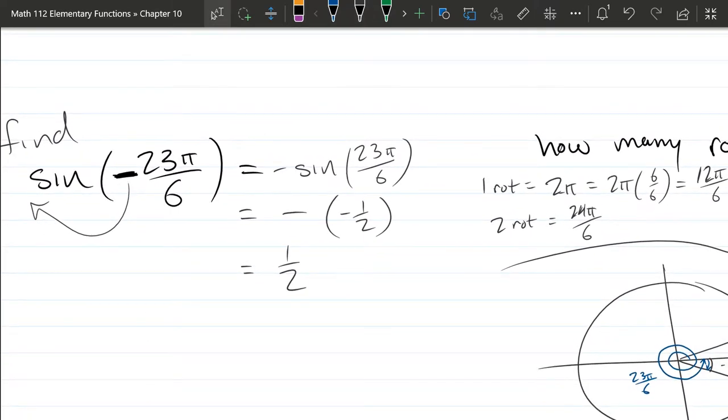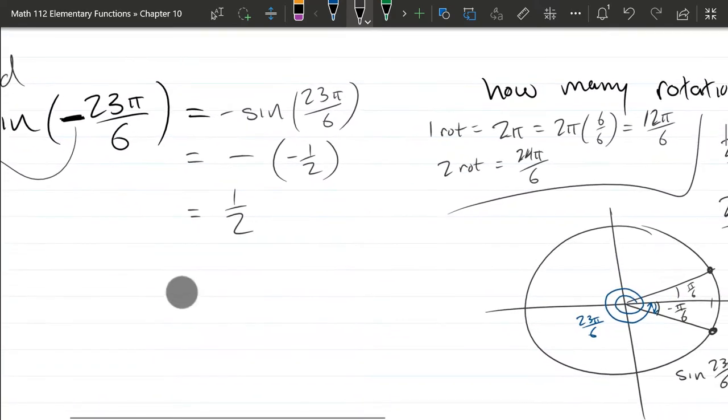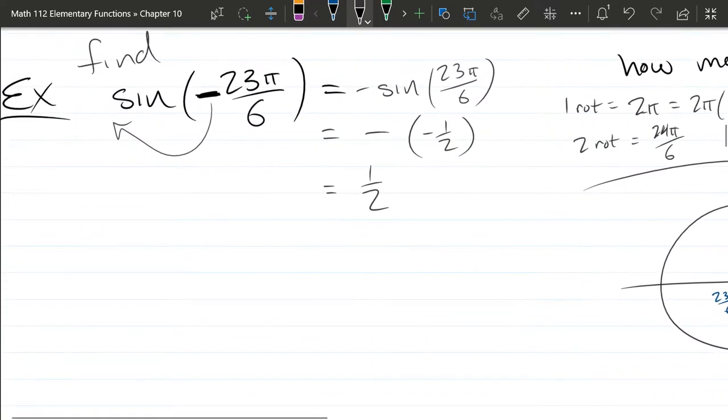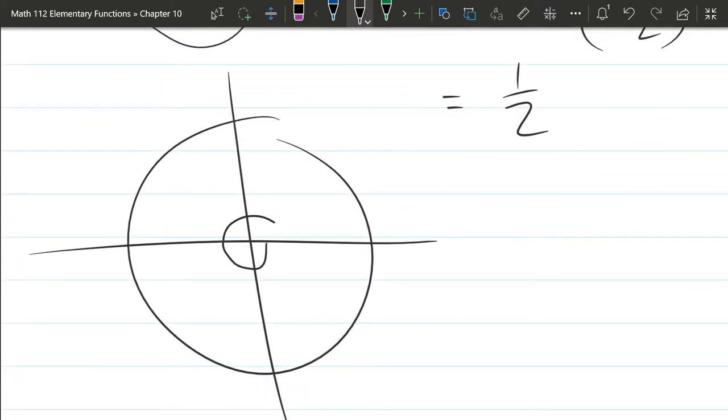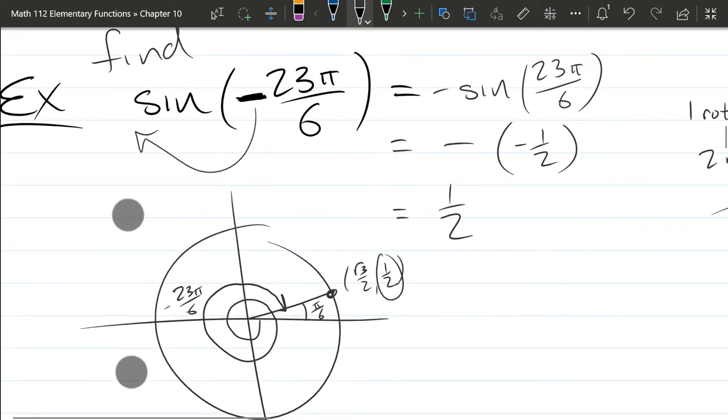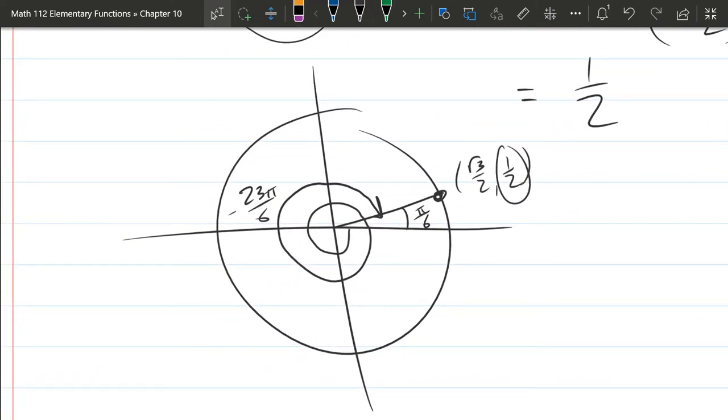And again, the reason that negative showed up is because we used the odd property to pull the negative out front of the sine. I could have done it without pulling that negative out. And what would this have looked like? We would have been going backwards. There's one full rotation. And then we would have stopped right here. So that's negative 23π over 6. It's almost two negative rotations. You stop right there. Our reference angle would be π over 6 and square root of 3 over 2, 1 half. That 1 half is the y value that we were originally looking for. So, if I do it without the odd property, I have it right here.